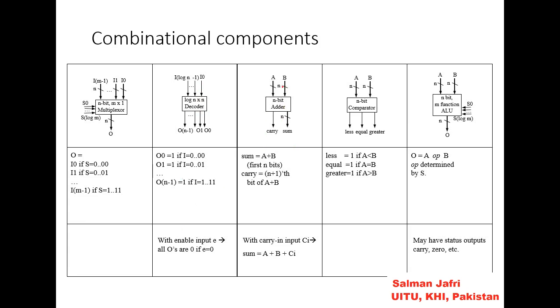Then we have the sum, which can be the sum of the 2 inputs, and we can have the carry as well. This is basically the n-bit adder which is taking 2 inputs and generating the sum and the carry. Then we have the n-bit comparator which compares the bits of A and B. If this less output is 1, it means A is less than B. If equal output is 1, it means A equals B. If the greater output is 1, it means A is greater than B.